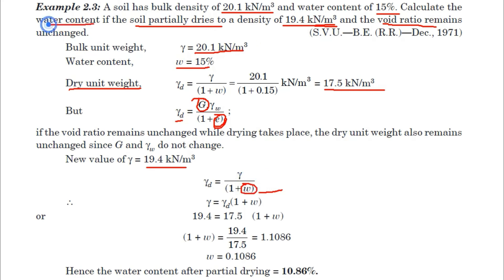Rewriting the formula as γ = γd × (1 + w), we substitute: 19.4 = 17.5 × (1 + w). There is only one unknown, w, so we solve the equation and get w = 0.1086. Converting to percentage, the water content is 10.86%.